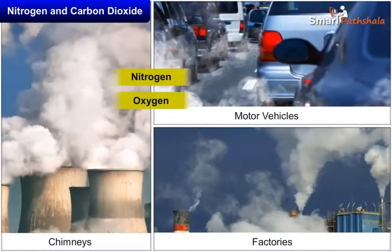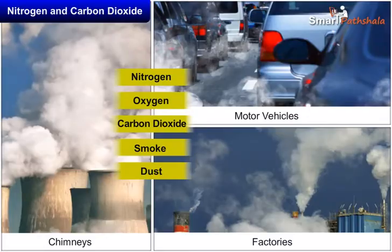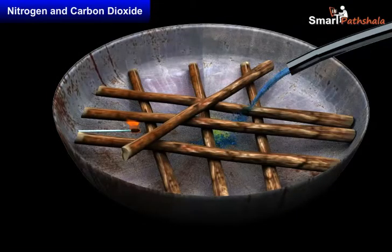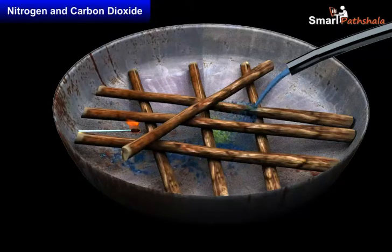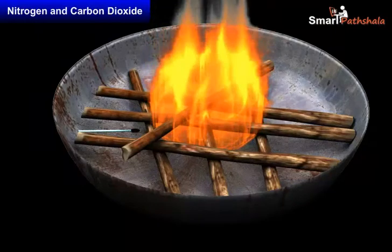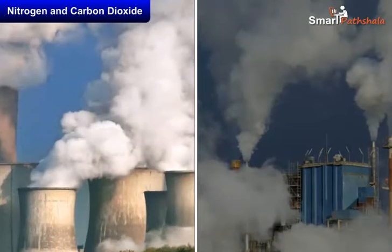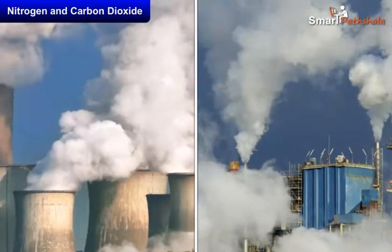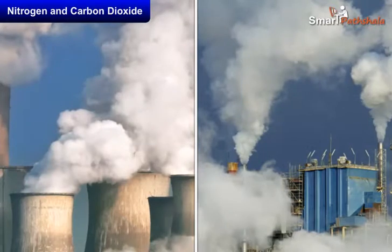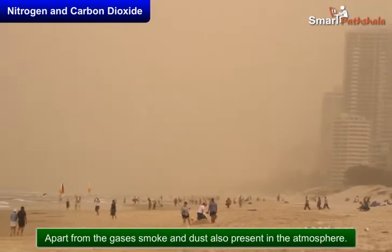Apart from nitrogen, oxygen, and carbon dioxide, smoke and dust are also present in the atmosphere. Burning of fuel produces smoke. Smoke contains a few gases and fine dust particles and is often harmful. That is why you see long chimneys in factories — this takes the harmful smoke and gases away from us. Apart from smoke, dust particles are always present in the air.